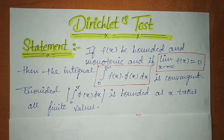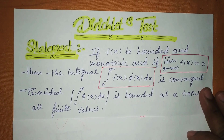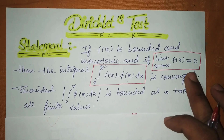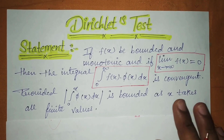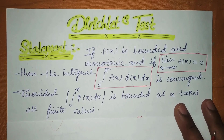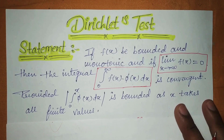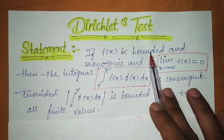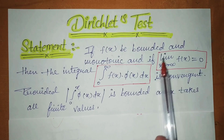This is the statement for the Dirichlet Test. You should remember this statement, because when we have a related question, you should remember directly what rules apply. Just pause this video and read this statement. If fx is bounded and monotonic — that is the first condition — and what is the second condition?